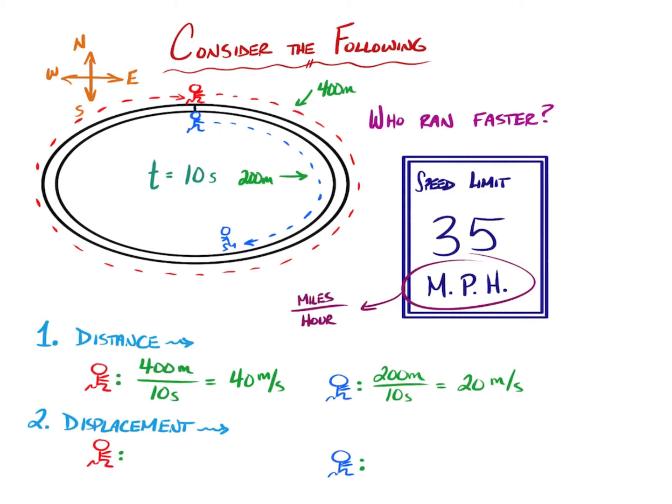The blue runner only covered 200 meters in the same amount of time, 10 seconds. Therefore, they were running at about half the speed or 20 meters per second. This is what most people think about when you're trying to analyze how fast something's moving.